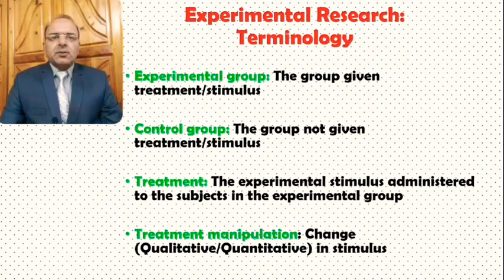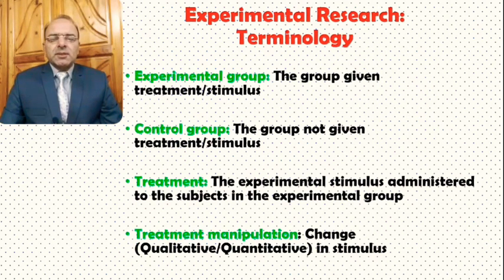And then there is the control group — the group not given treatment or stimulus. So generally in an experimental study where we have two groups, the experimental group and the control group, the group that receives the treatment or the stimulus is the experimental group, and the one that does not is the control group.